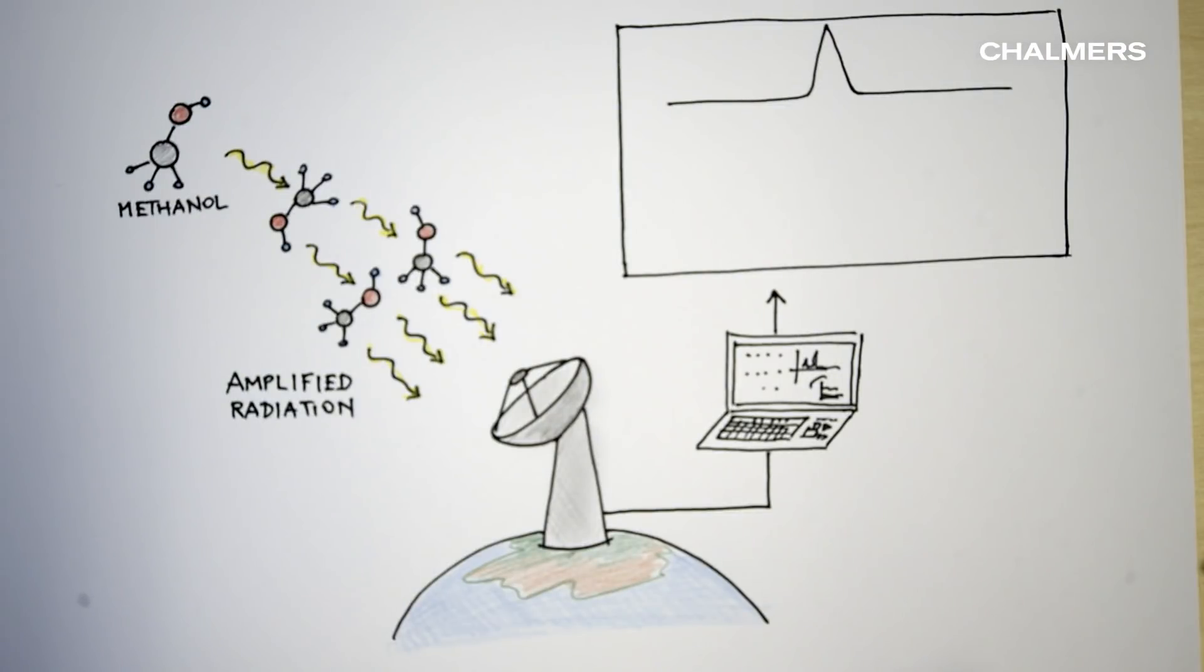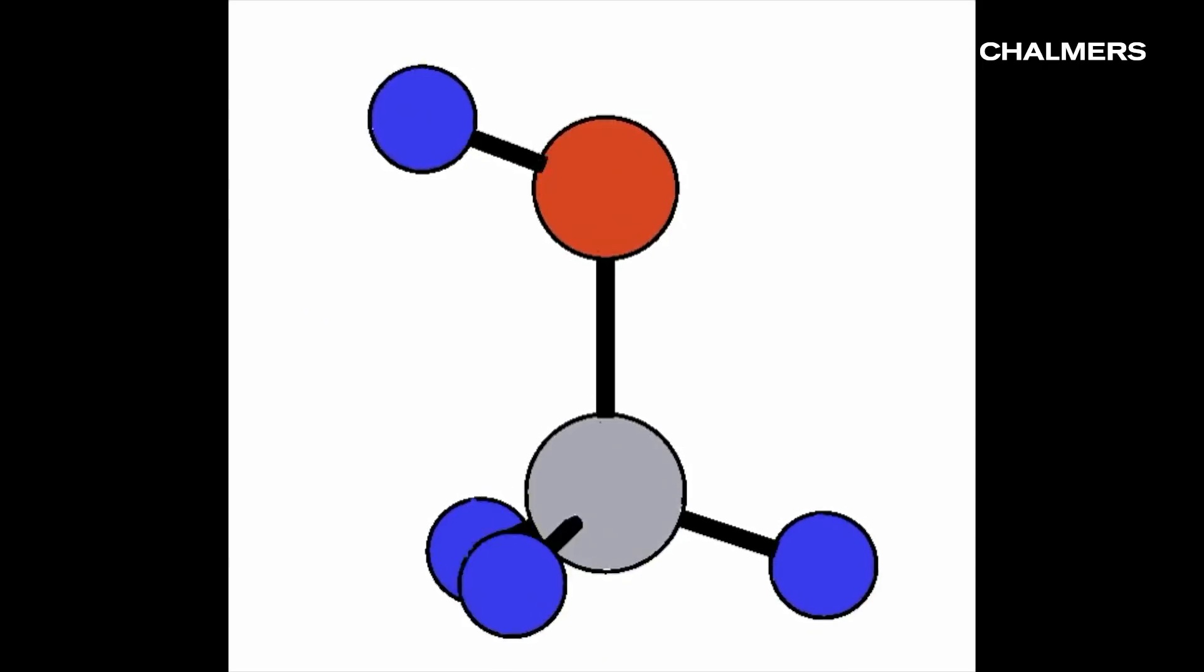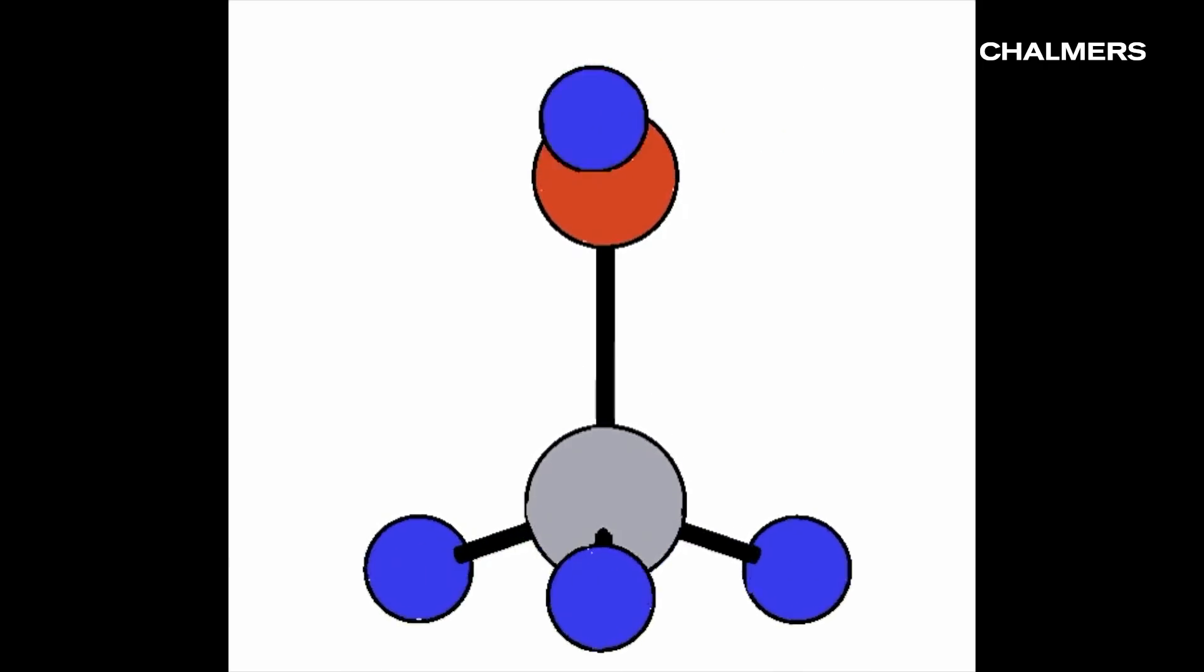So, how can we use these masers to measure magnetic fields? The answer lies in the individual molecules that make up the maser.